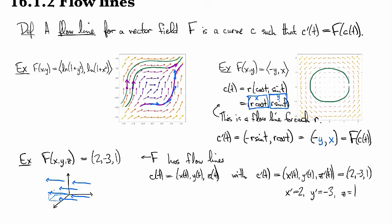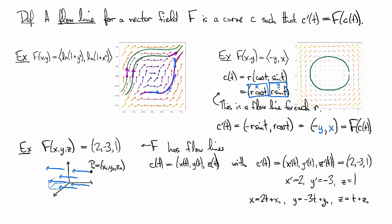From that we can deduce that x is going to be two t plus some x naught, y is going to be minus three t plus some y naught, and z is going to be t plus z naught. What's that constant? That constant x naught, y naught, z naught is the point that you're passing through, some given point. So we've determined that our flow line is going to be two, minus three, one times t plus whatever point we pass through.